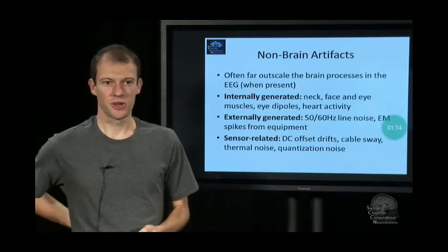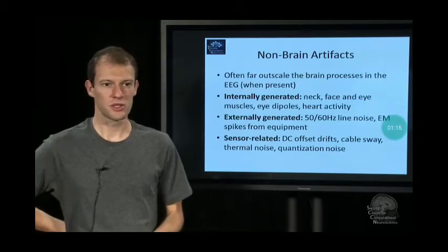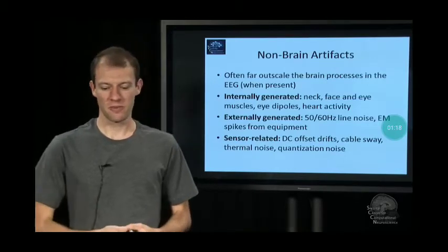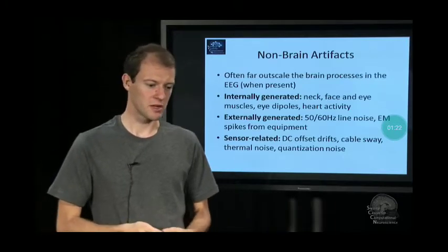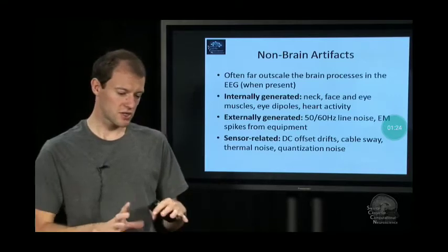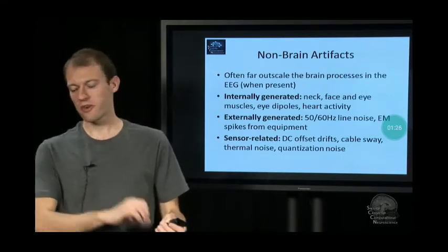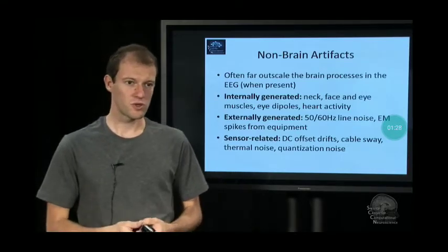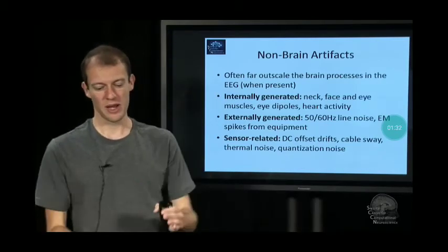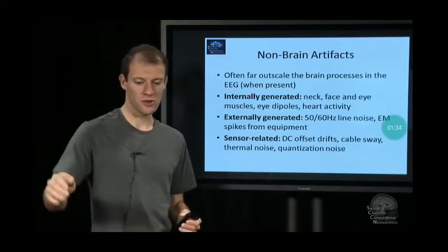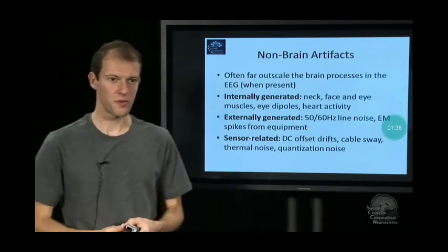And then there's externally generated artifacts like the power line noise, like EM spikes from fluorescent lights and things like that, which can mess up your signal. But in many cases, these signals are simple enough that you can factor them out. That's what you want to do because it's the same signal projected onto multiple electrodes. So if you observe it in one, you can subtract it from all the others if you know the weighting.